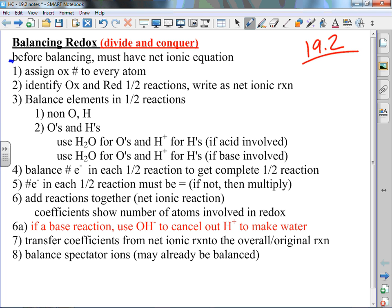We've got to write formulas, predict products, and get to net ionic. So here's the first thing you do: assign oxidation numbers to every atom. Then you need to identify what is the oxidation and what is the reduction half reaction, and write that half reaction.